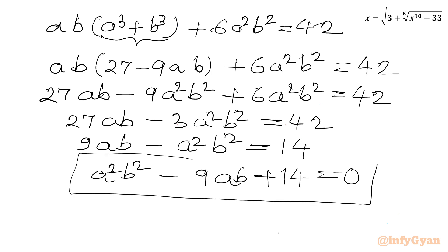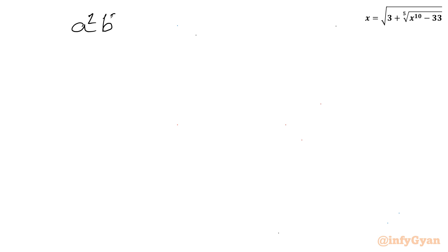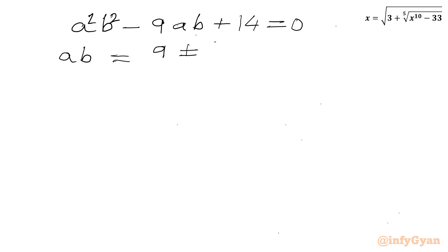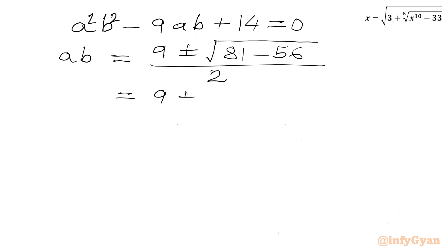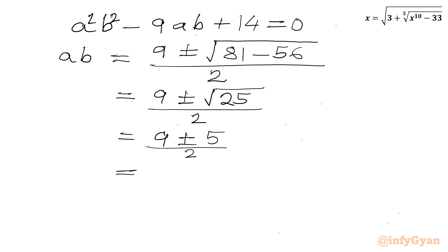This is a quadratic equation in ab. Applying the quadratic formula: ab equals (9 plus or minus square root of (81 minus 56)) over 2, which is (9 plus or minus square root of 25) over 2, giving (9 plus or minus 5) over 2. So ab equals 7 or ab equals 2.